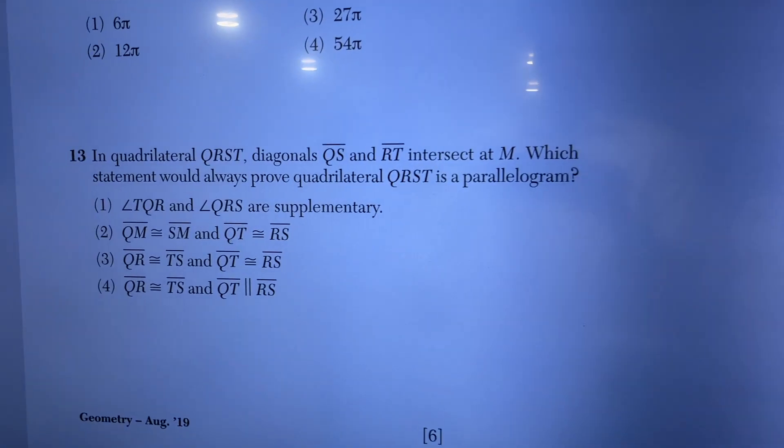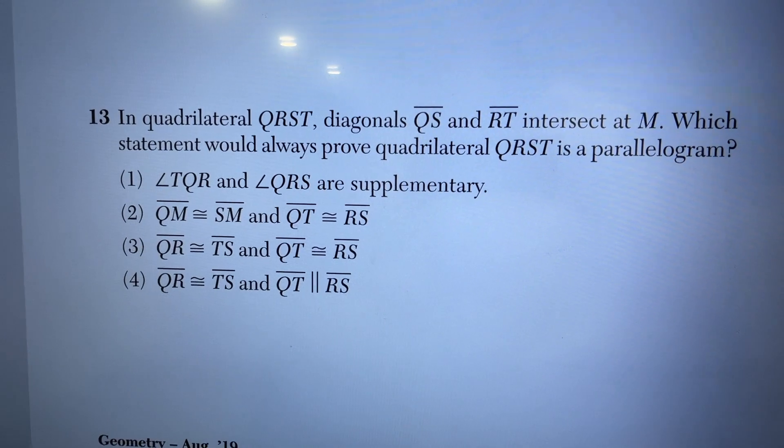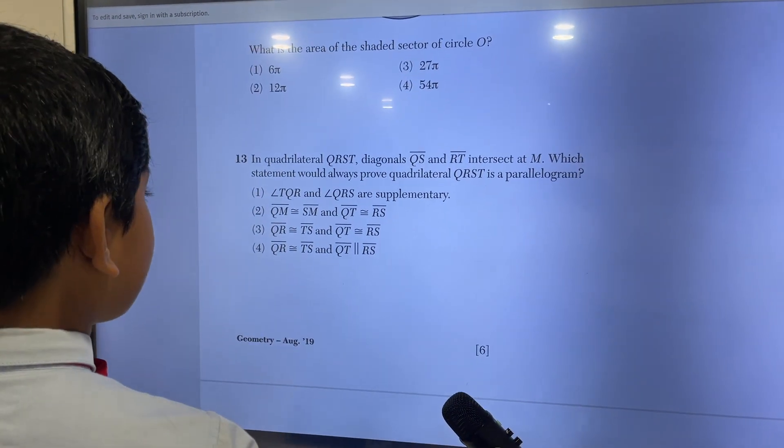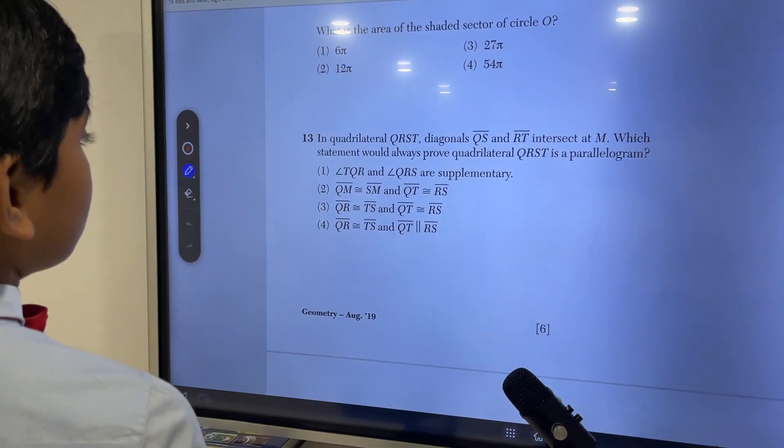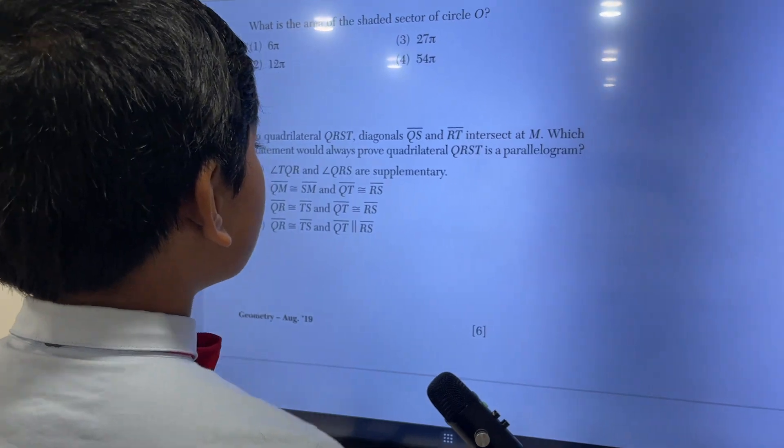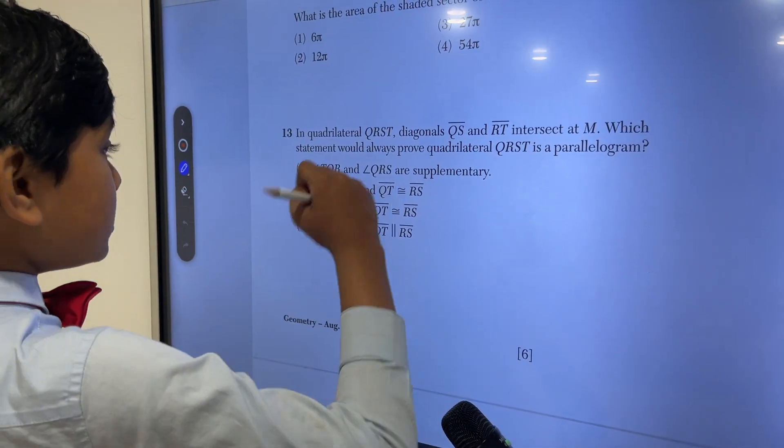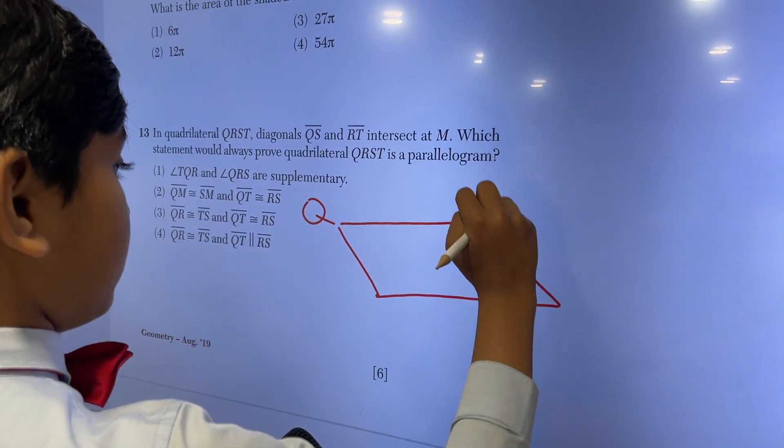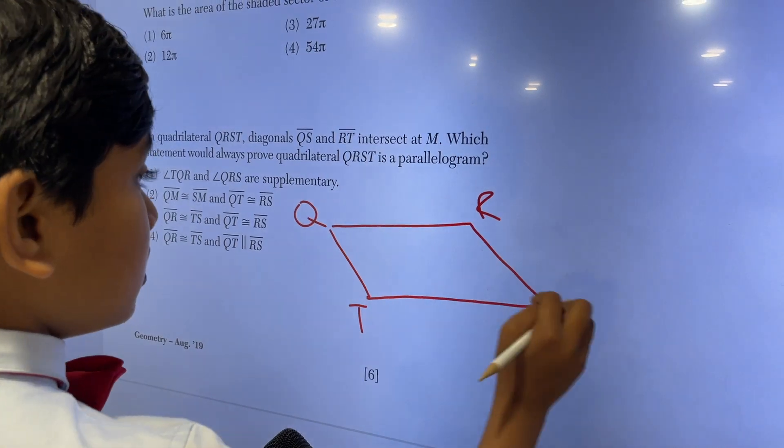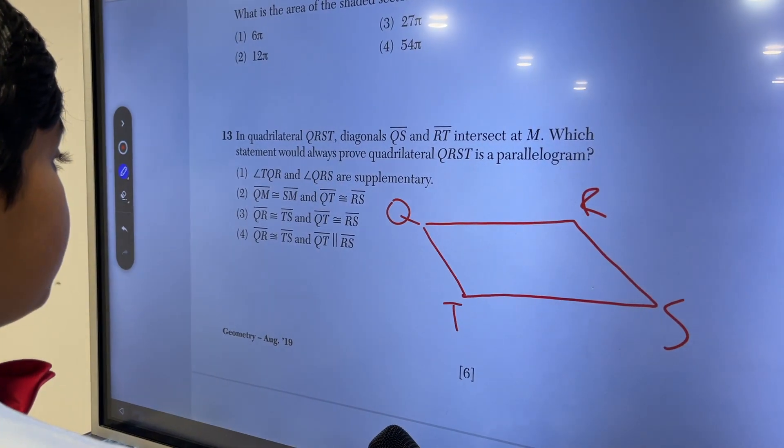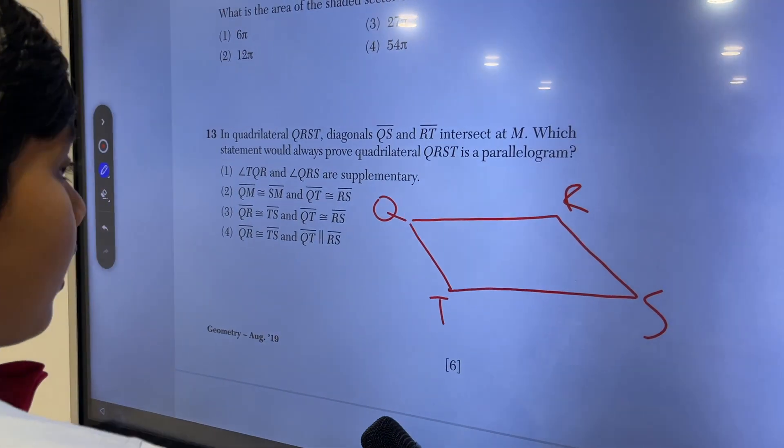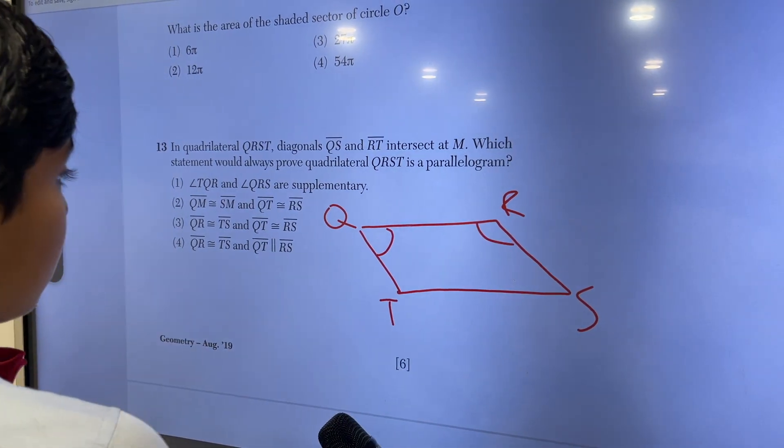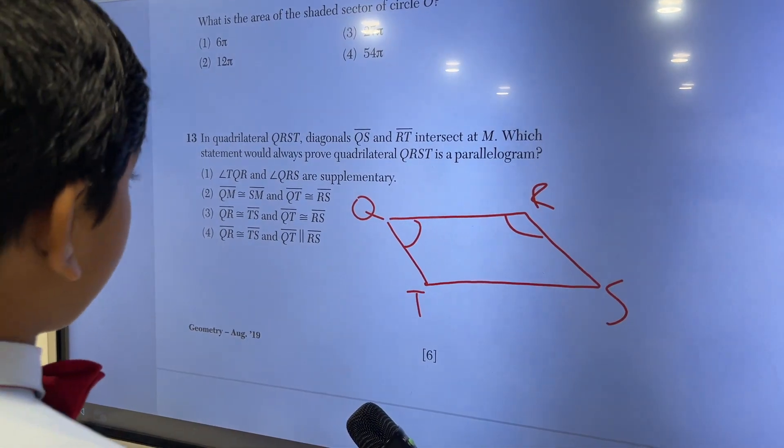Question 13: In quadrilateral QRST, diagonals QS and RT intersect at N. Which statement would always prove quadrilateral QRST is a parallelogram? Let's assume QRST is a parallelogram. What would its properties be? Which one of these would be true? Well, angle TQR and QRS are supplementary. Well that's obvious, but that can be true in a rectangle too.